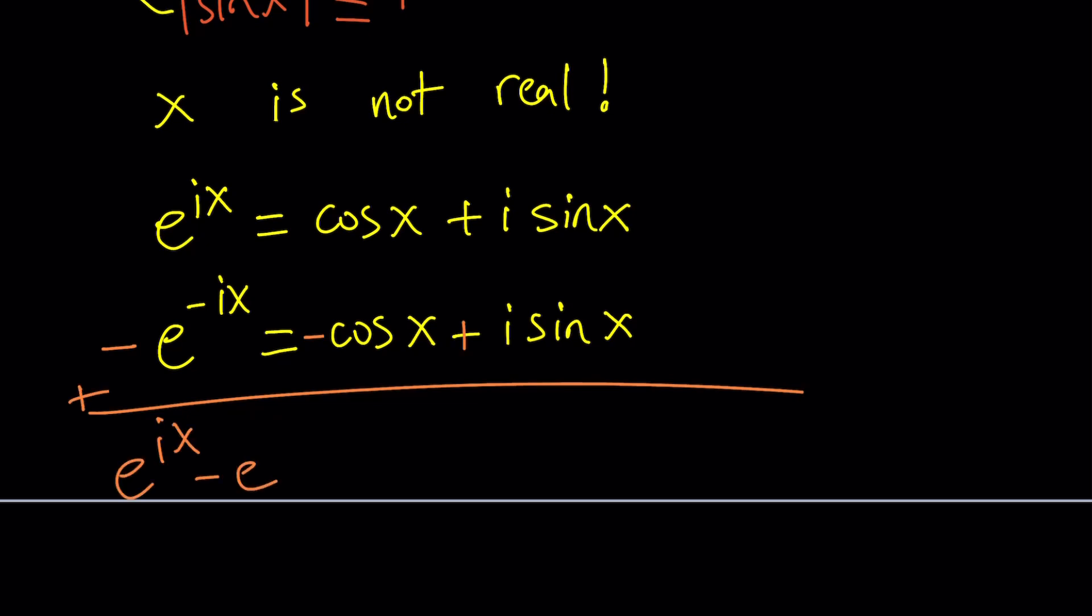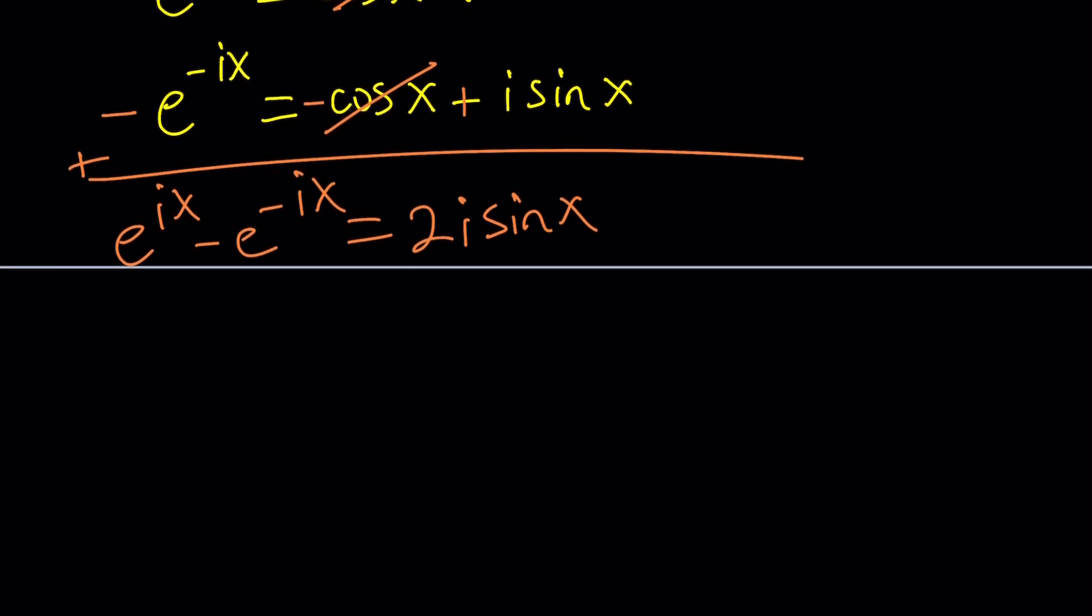e to the power of ix minus e to the power of negative ix equals, cosine cancels out, we end up with 2i sine x. Awesome. What do we do from here? Well, we're going to be solving for sine x, so let's divide both sides by 2i. Sine x, put it on the left, equals e to the ix minus e to the negative ix divided by 2i.